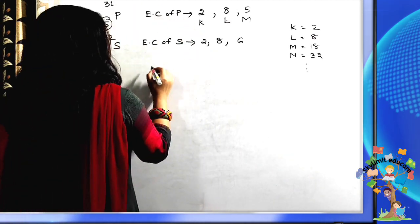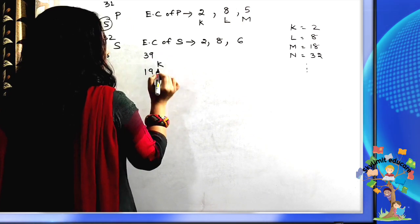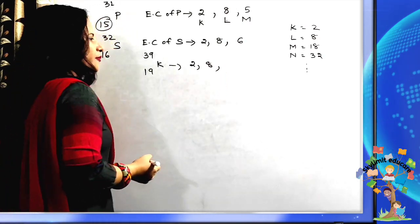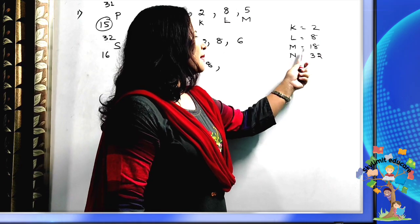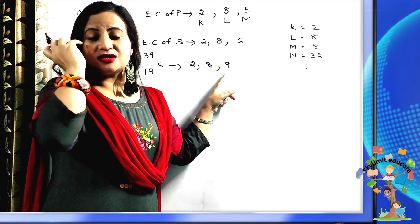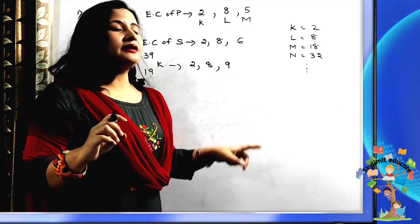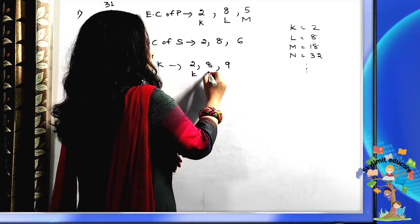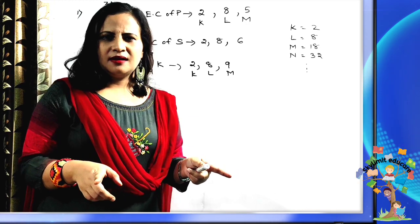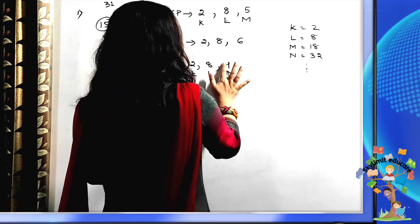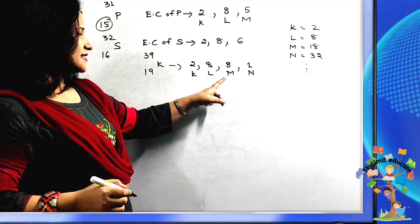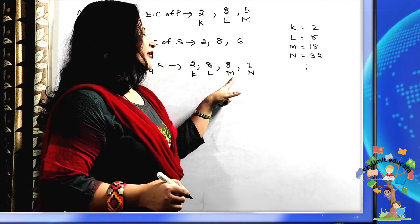Now let us do potassium with atomic number 19. First shell: 2, second shell: 8 — total 10 used, leaving 9 remaining. The M shell has a maximum capacity of 18, so it could hold 9, but the third rule says the outermost shell cannot have more than 8 electrons. So we cannot write 2, 8, 9 even though M's capacity is 18. Instead, we keep 8 in M shell and shift 1 to the N shell.